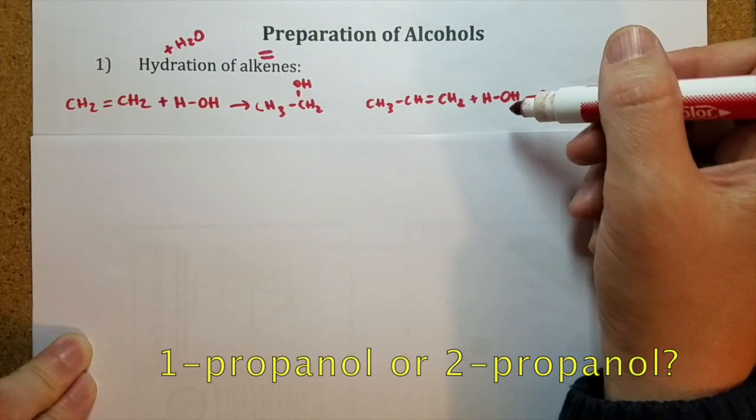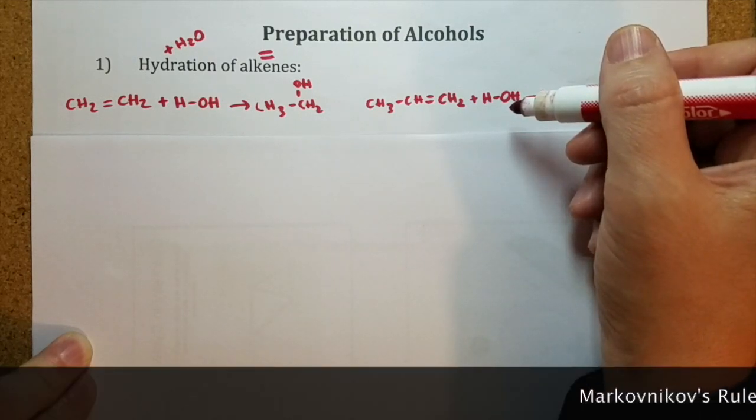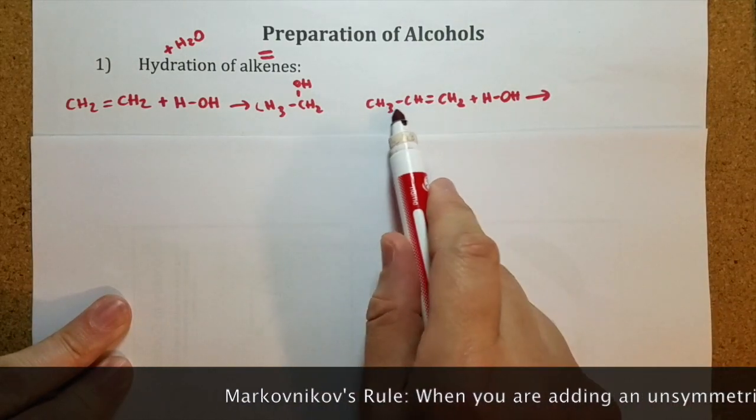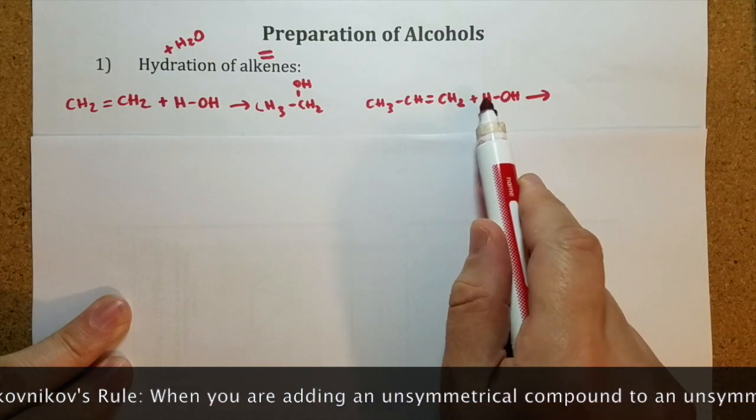But as you remember, we need to apply Markovnikov's rule in such cases. So, when you are adding an unsymmetrical molecule to another unsymmetrical molecule, hydrogen atom goes to the carbon atom which already has more hydrogens.